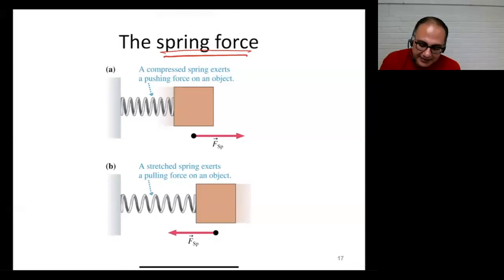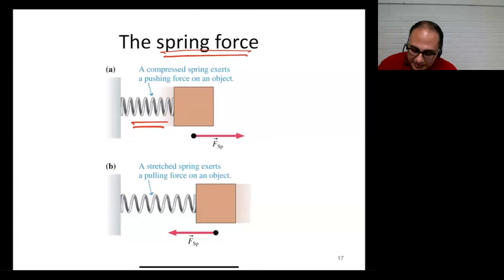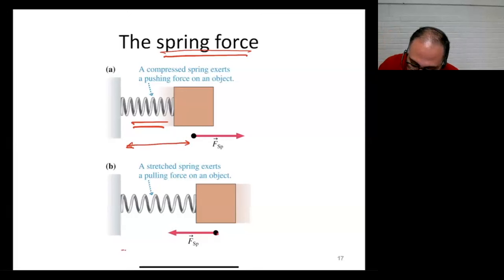This is a spring. What happens if you extend a spring? When you extend the spring, it tries to get back to its original configuration, to its unstretched length. We've pulled the spring out to a certain distance — this is the unstretched length, and we've stretched the spring out by a certain distance.